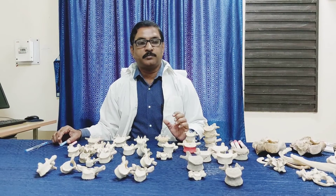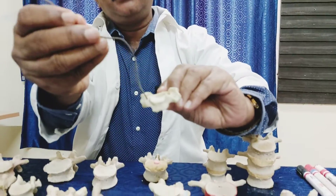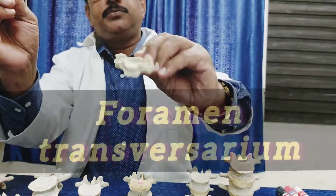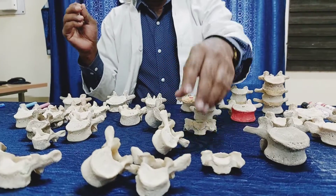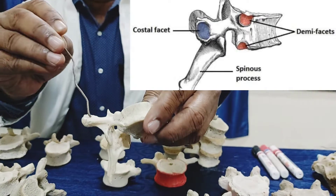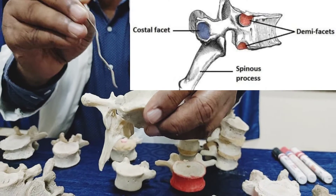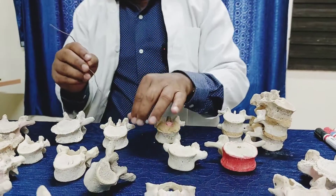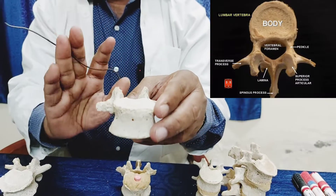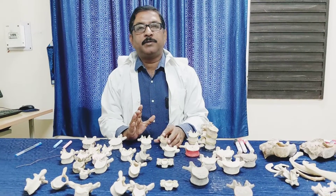First, you have to confirm it is not thoracic and not cervical. In the cervical vertebra, the transverse process has a foramen on either side called the foramen transversarium. In the thoracic vertebra, another important feature is the costal facet on the body and also a costal facet on the transverse process — present for articulation with the ribs. So in the lumbar vertebra, you will get neither the foramen transversarium nor the costal facet. Once you confirm those are absent, you know it is a lumbar vertebra.